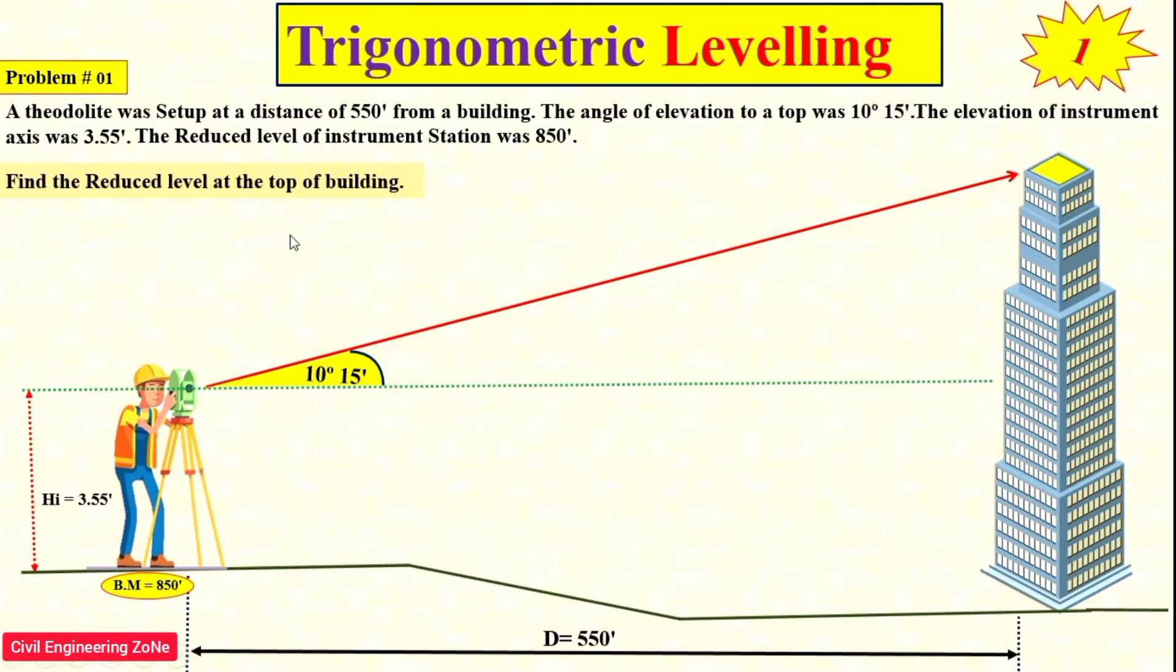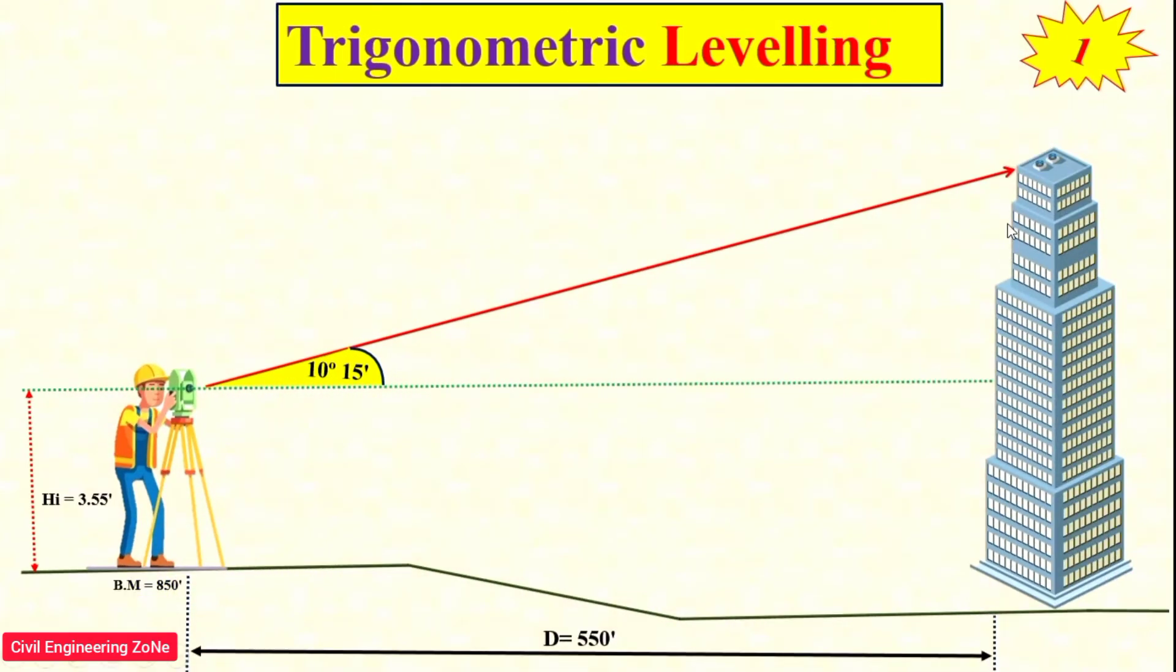The required data we have to find is the reduced level of the top of the building. This data is sufficient to calculate the reduced level of the top of the building. If we take the upper portion and calculate the value of h1, then we can easily calculate the reduced level of the top of the building by taking the value of the benchmark plus Hi plus h1.